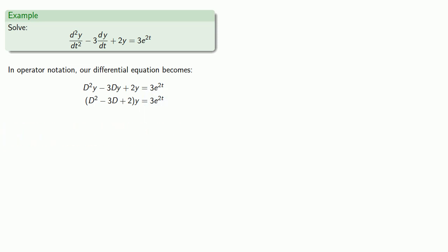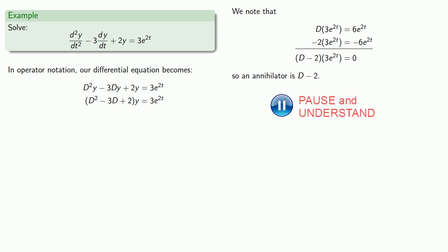However, if we look at this 3e^(2t), we note that if we differentiate it, we get 6e^(2t). And if we subtract twice the function, we get zero. So an annihilator is going to be (D - 2). We'll annihilate the 3e^(2t).